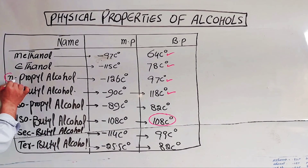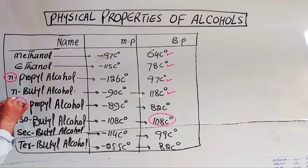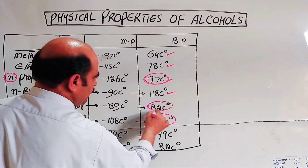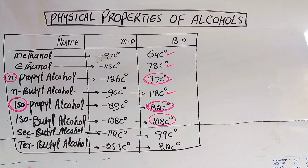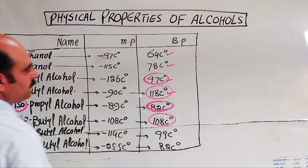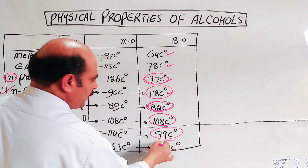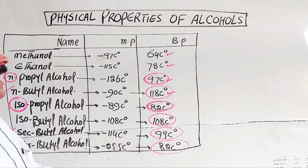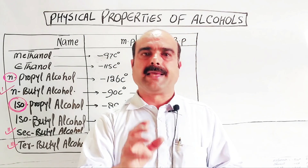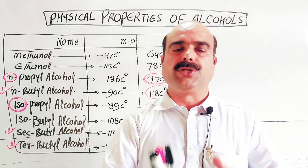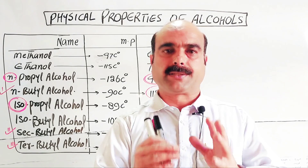Comparing normal propanol and isopropanol: normal propanol boiling point 97°C, isopropanol 82°C. For butyl alcohols: normal butyl 180°C, secondary butyl 99°C, tertiary butyl even lower. These were all the physical properties of alcohols. Thanks a lot for watching. May you live long and may Allah succeed you in every walk of your life.